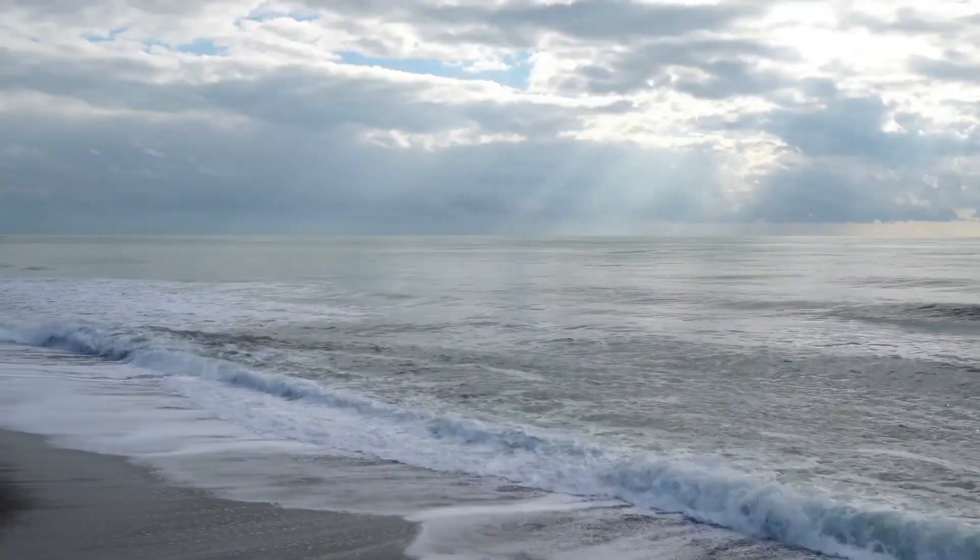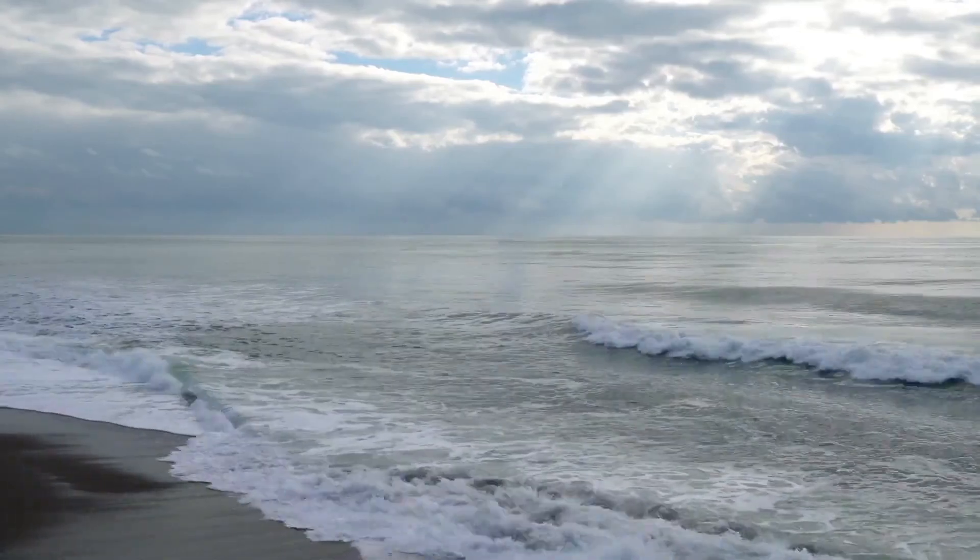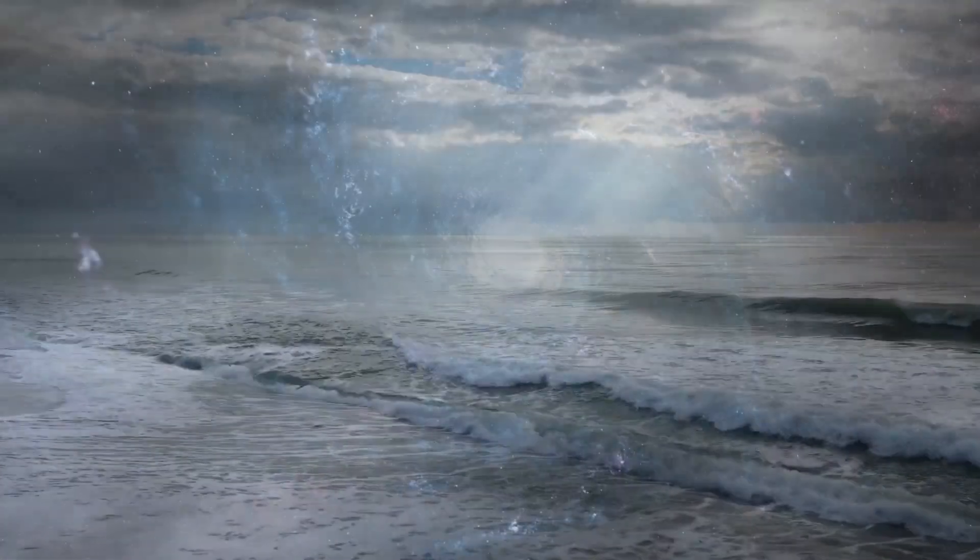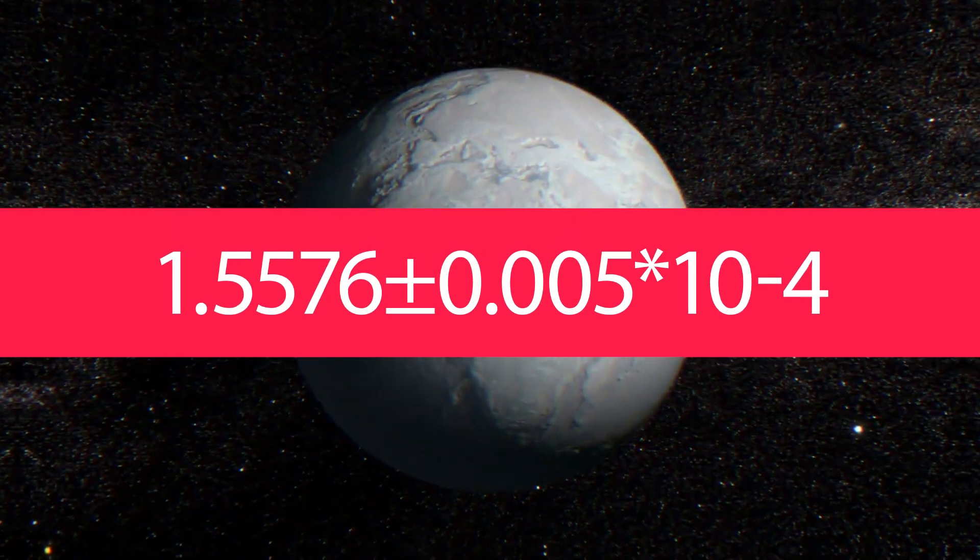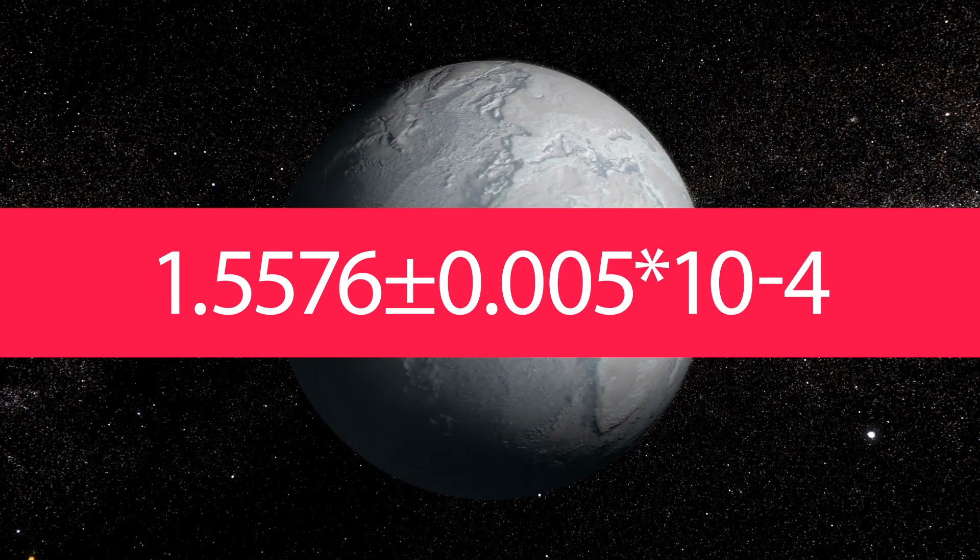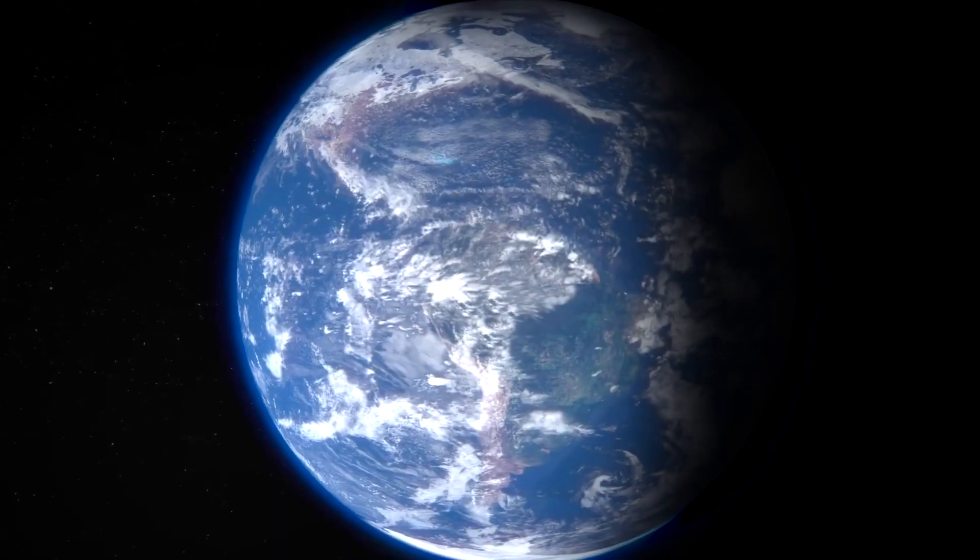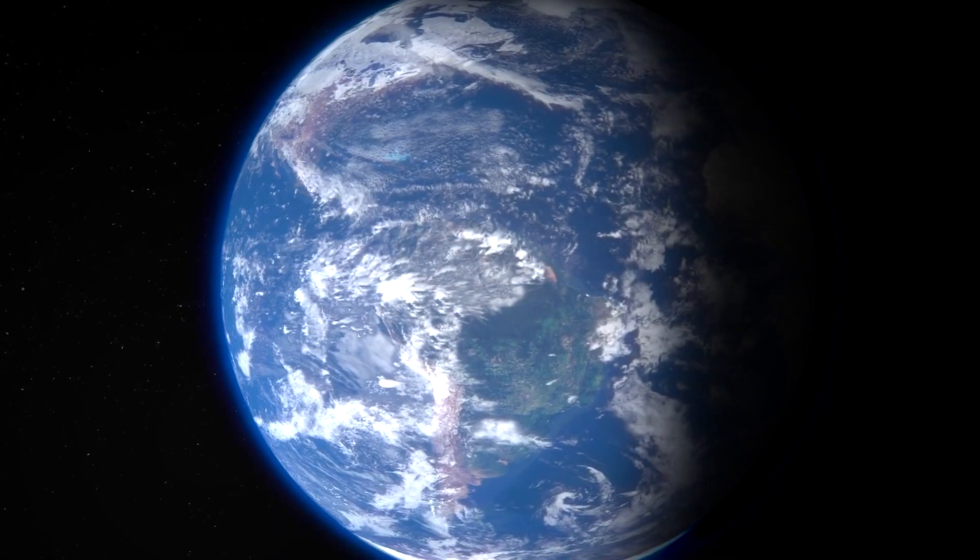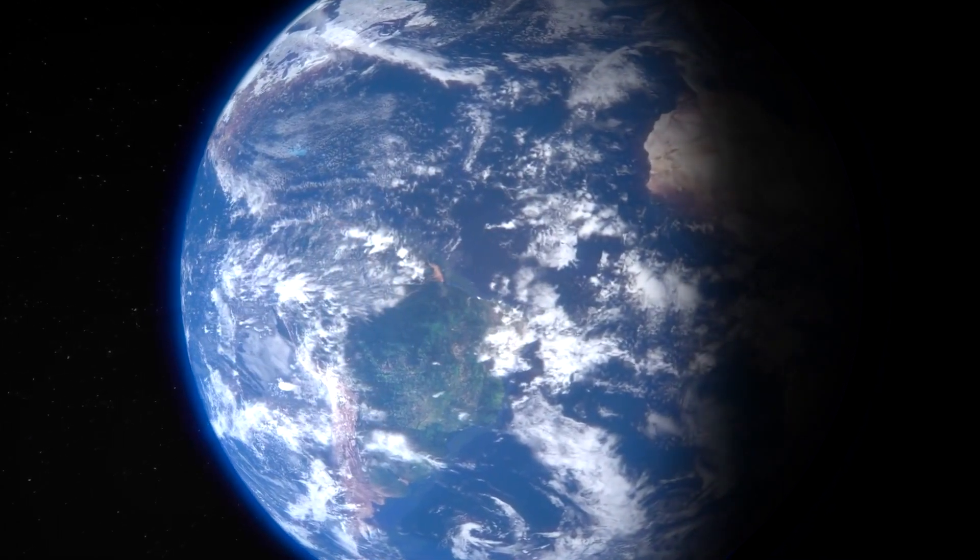The ratio of deuterium to hydrogen in ocean water on Earth is crucial in understanding the origins of water on our planet. This ratio, 1.5576 plus or minus 0.0005 times 10 to the negative fourth, is a combination of all the sources that have contributed to Earth's water reservoirs. Scientists believe that this ratio may have increased over time due to the lighter isotope of hydrogen escaping into space through atmospheric processes. However, no known process can decrease the ratio.